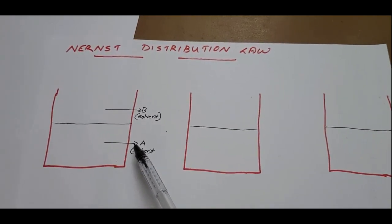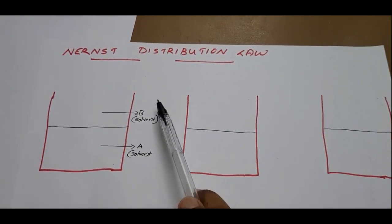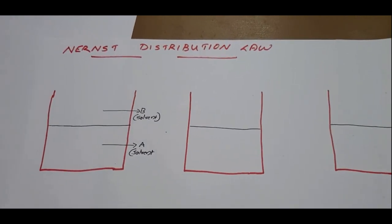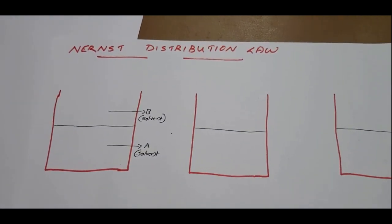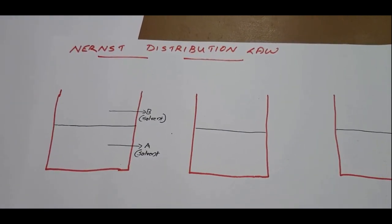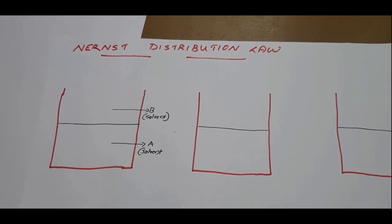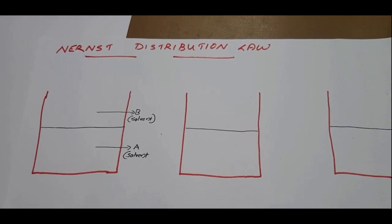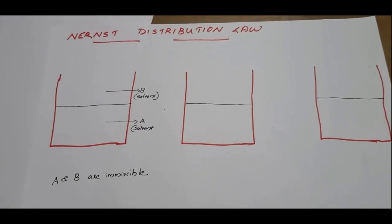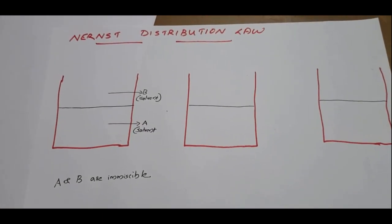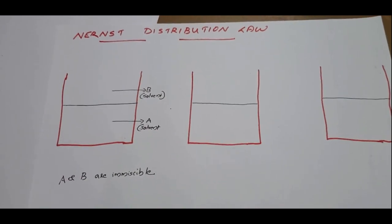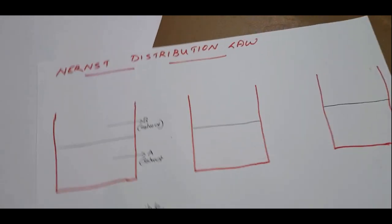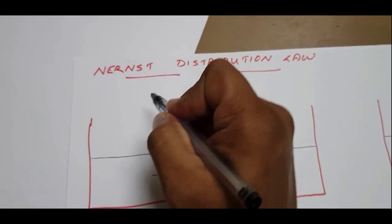We take two solvents, A and B. A and B are two solvents. Two conditions are there: A and B form a heterogeneous system, or A and B are solvents that are immiscible to each other. A and B are immiscible and they form a heterogeneous system.